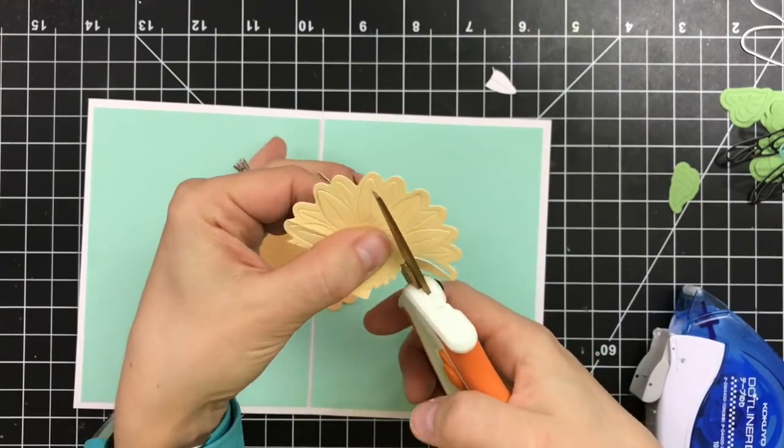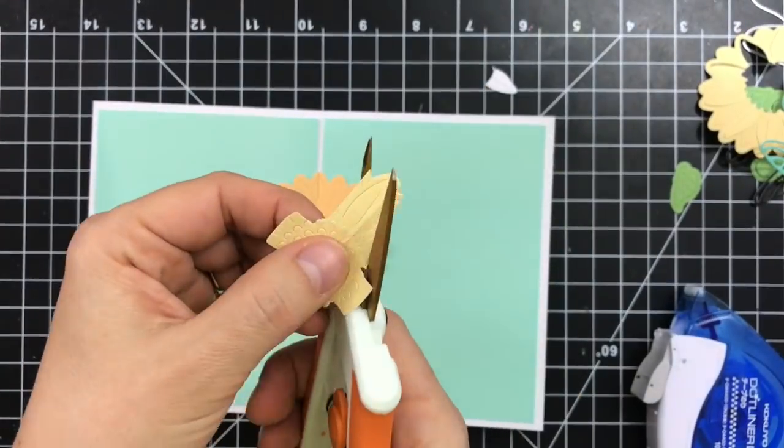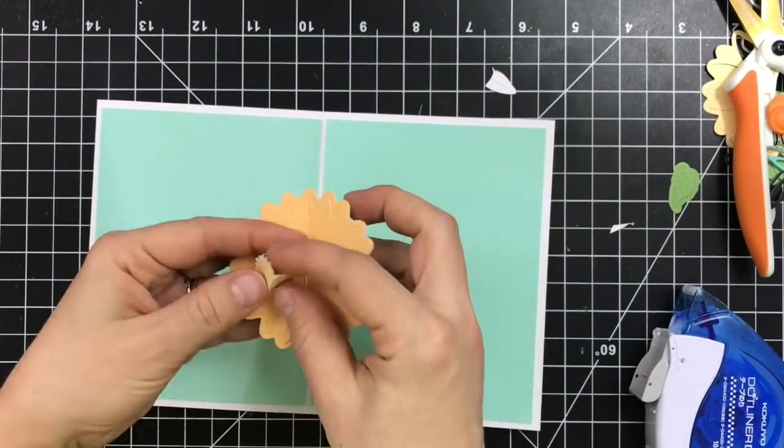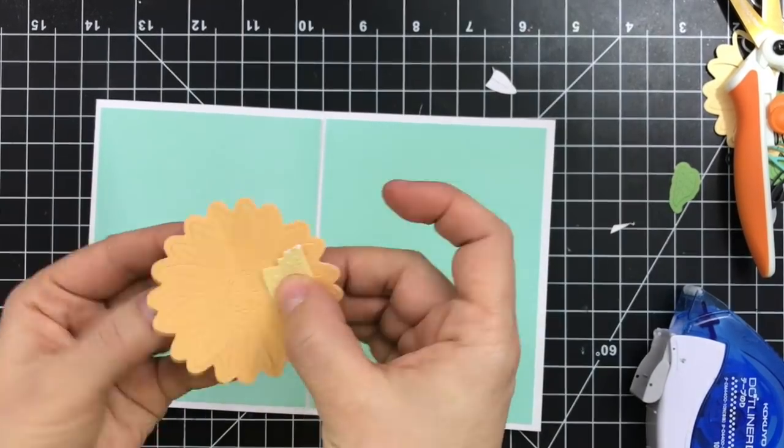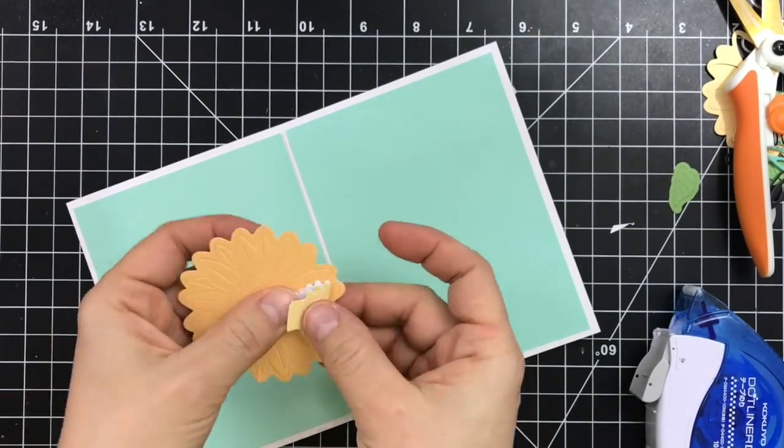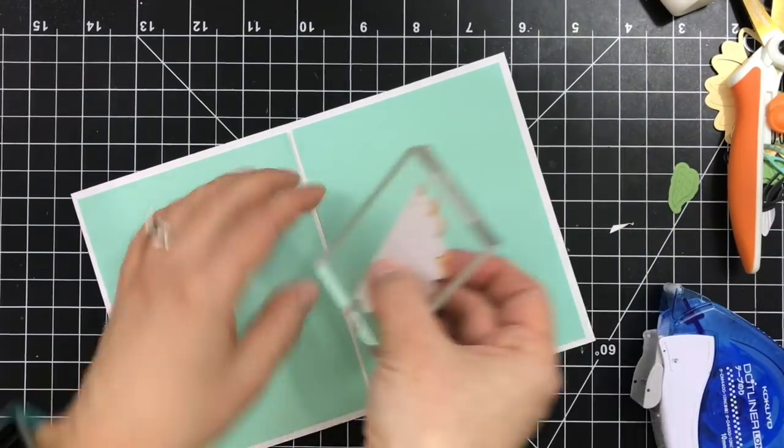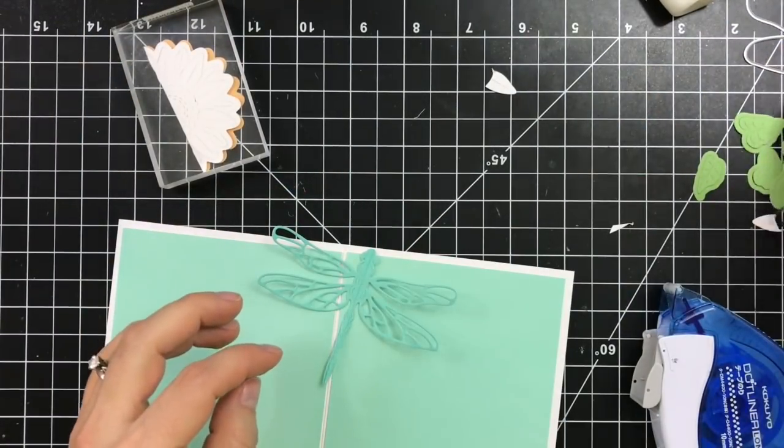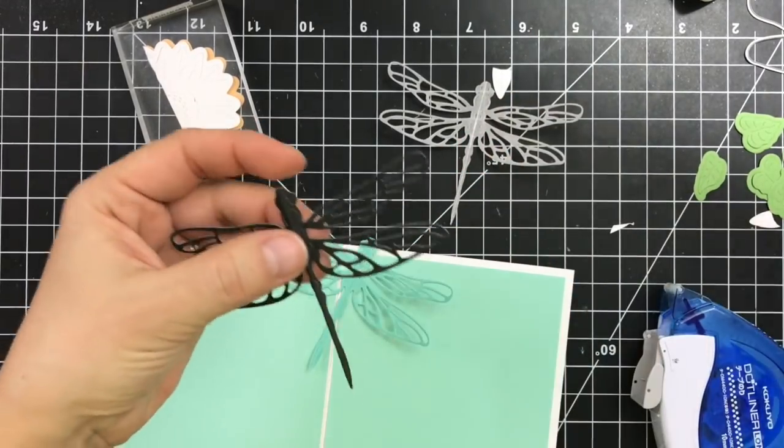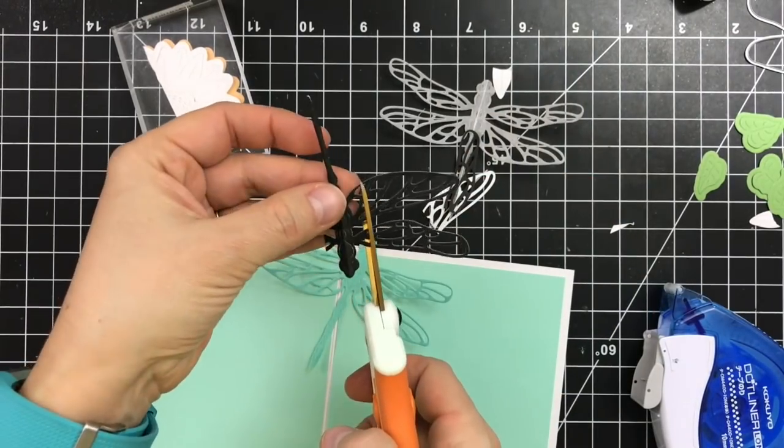I'm cutting the center out of that lighter yellow and I'm creating two tabs while I'm cutting on the sides. So you have the mountain fold on that one and then the tabs go on the sides and then I'll adhere it. So the tabs go inside under that center. That will create that when you close the card, the center will go up and the base of the flower will go down.